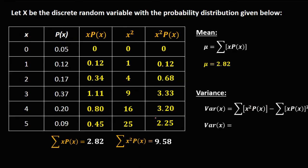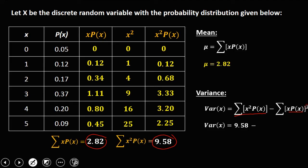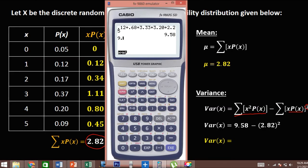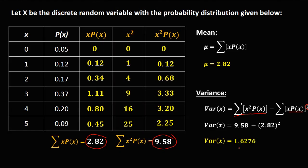To solve for the variance, we use the formula: summation of x² times P(x) minus the square of the mean. That's 9.58 minus 2.82 squared. So the variance is 1.6276.